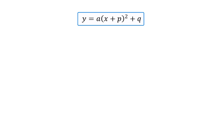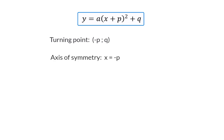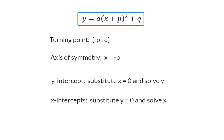We have now seen that when you are given an equation in the turning point standard form, you can immediately determine the turning point, and that will be (-p, q). You can also say that the axis of symmetry is on the line x is equal to minus p. You cannot see the y-intercept directly, so you will have to determine it by substituting x with 0 and solving y. The x-intercepts can still be determined by substituting y with 0 and then solving x.